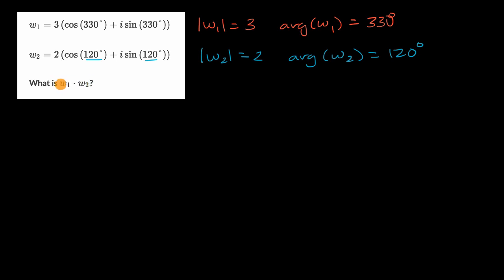Now when you multiply complex numbers, you could view as one transforming the other. We've seen this in multiple examples. So let's imagine that we are transforming W two by multiplying it by W one. So what is going to happen? Well, let me write it here.